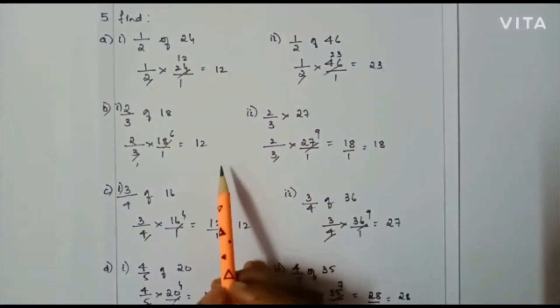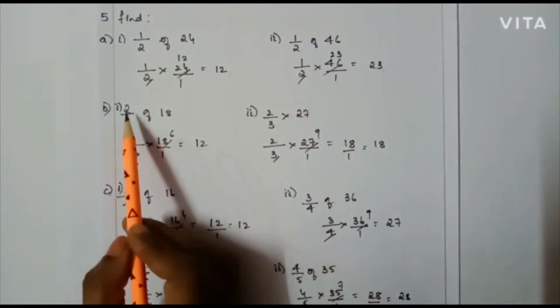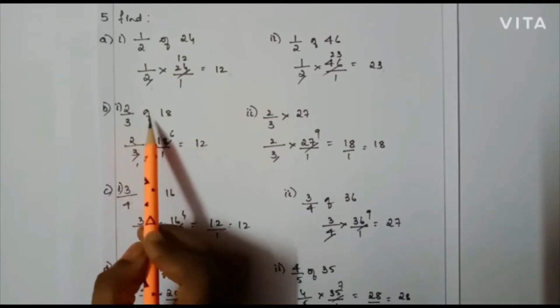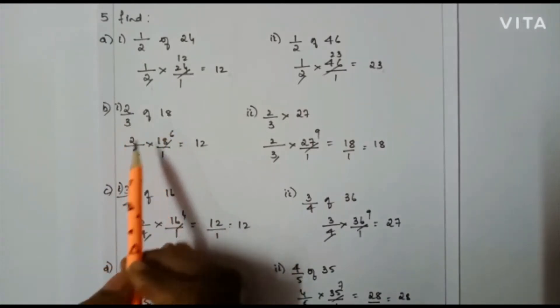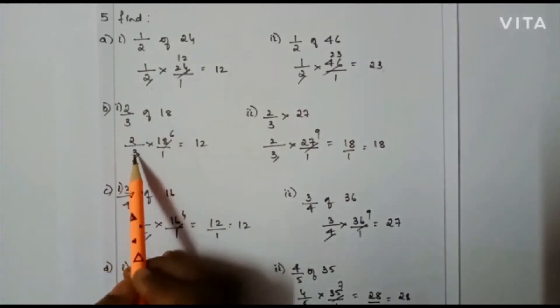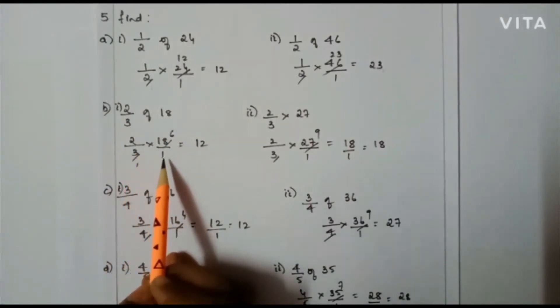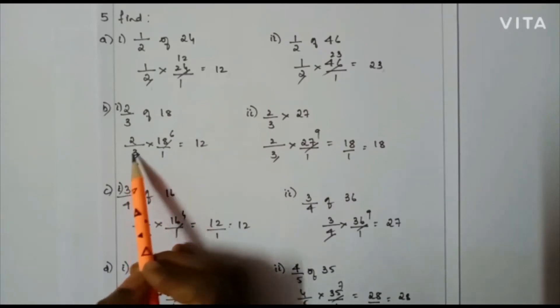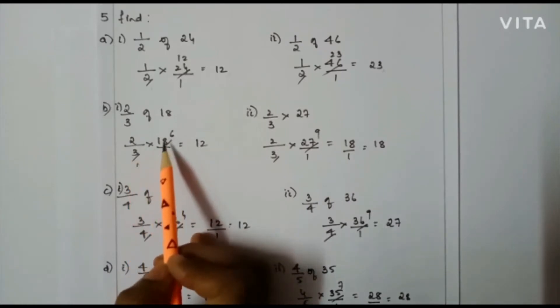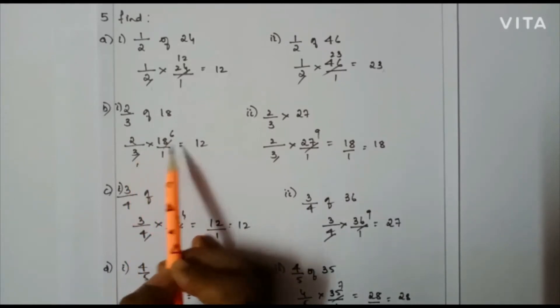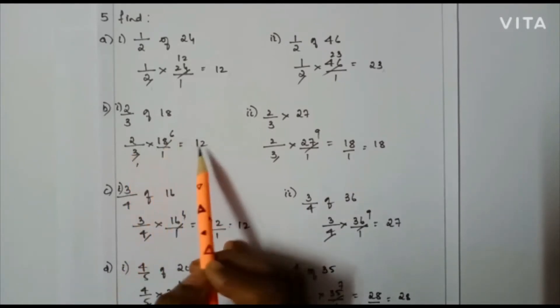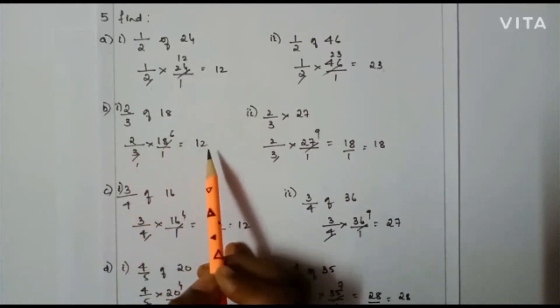The next one: 2/3 of 18, that is 2/3 × 18/1. Here I can cancel: 3 divides 18 giving 1 and 6. So 2 × 6 = 12 is the answer.